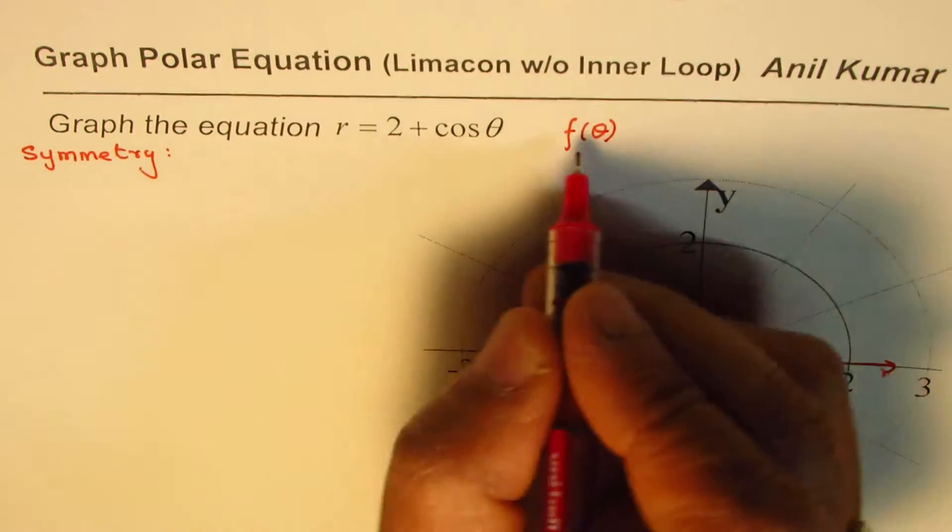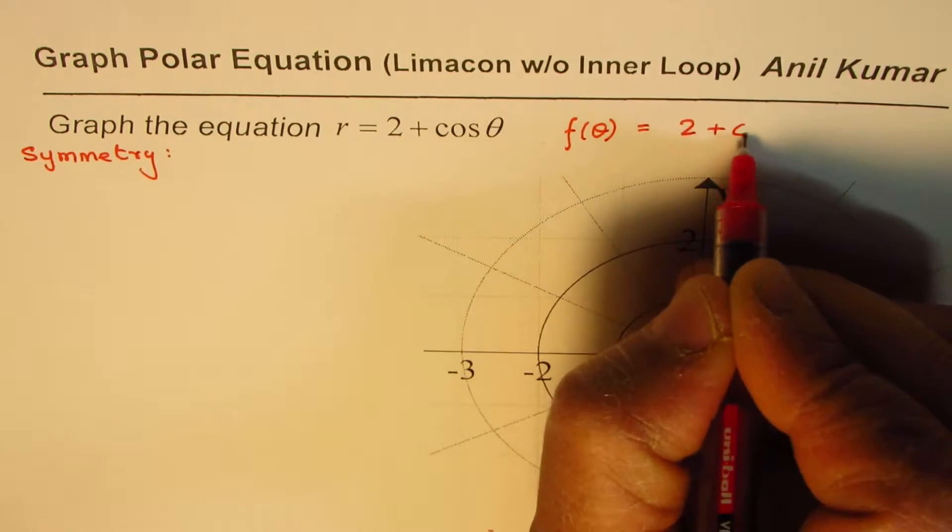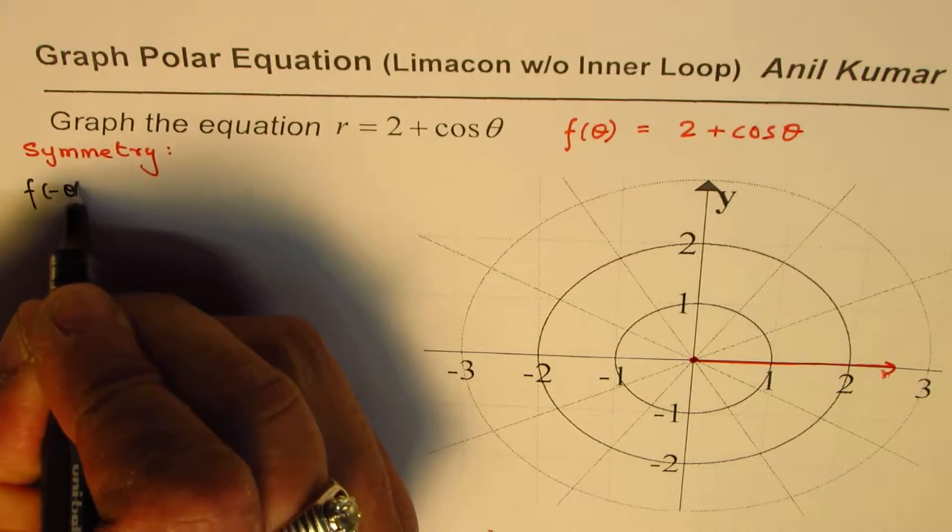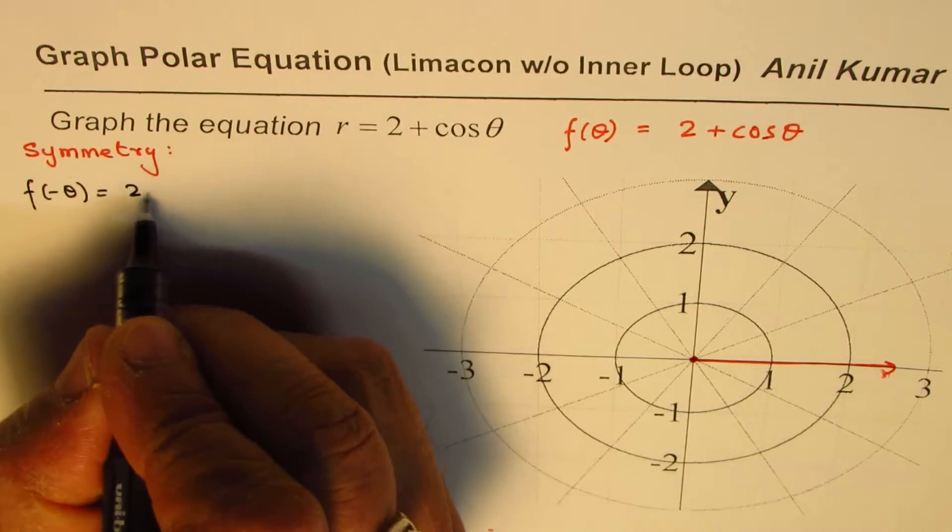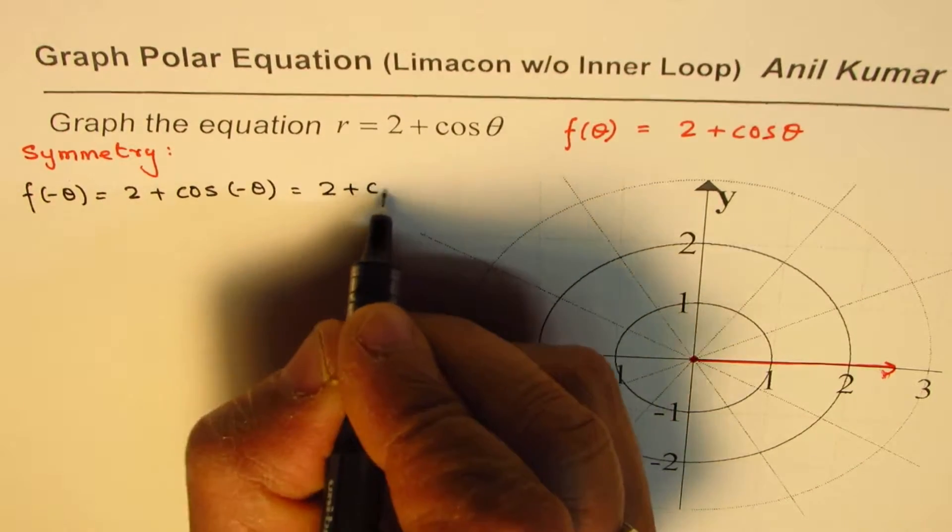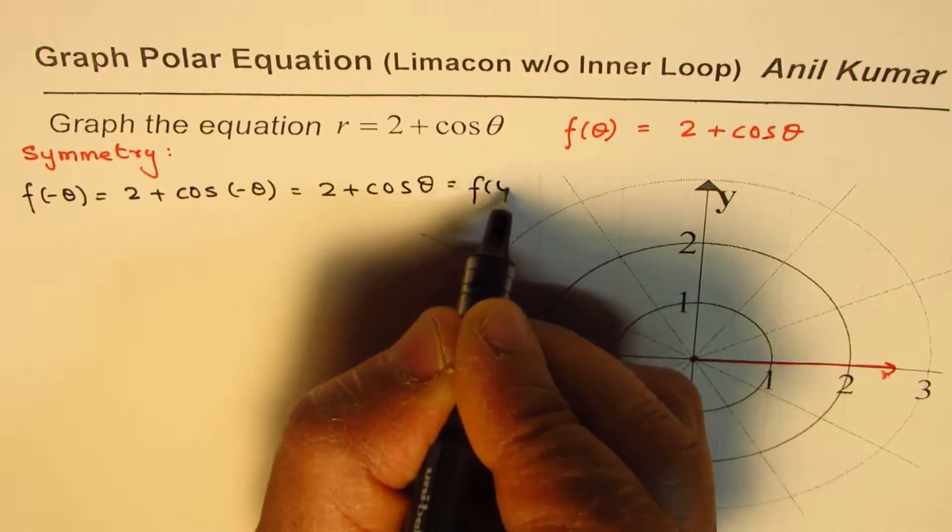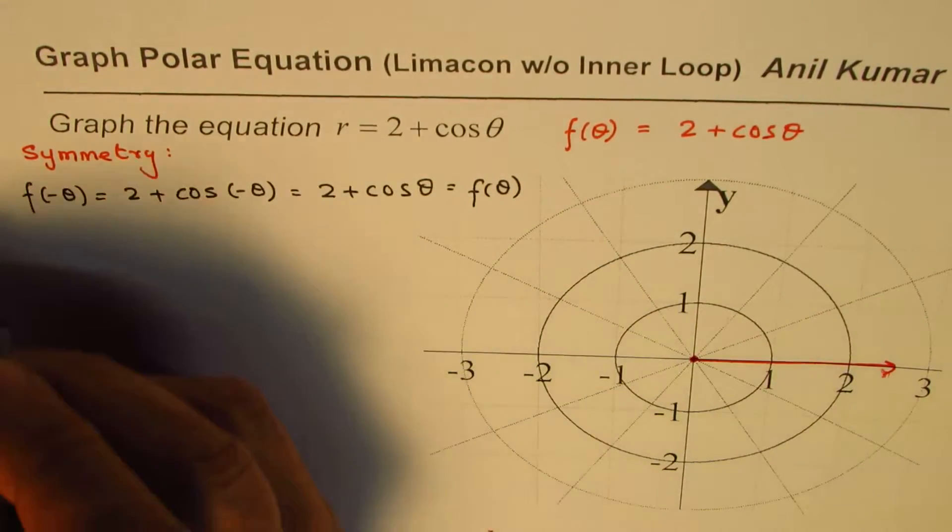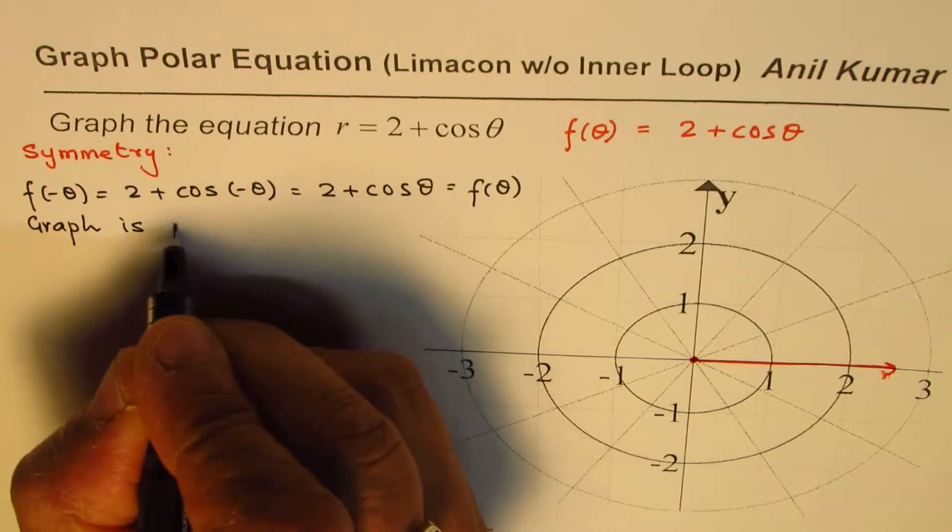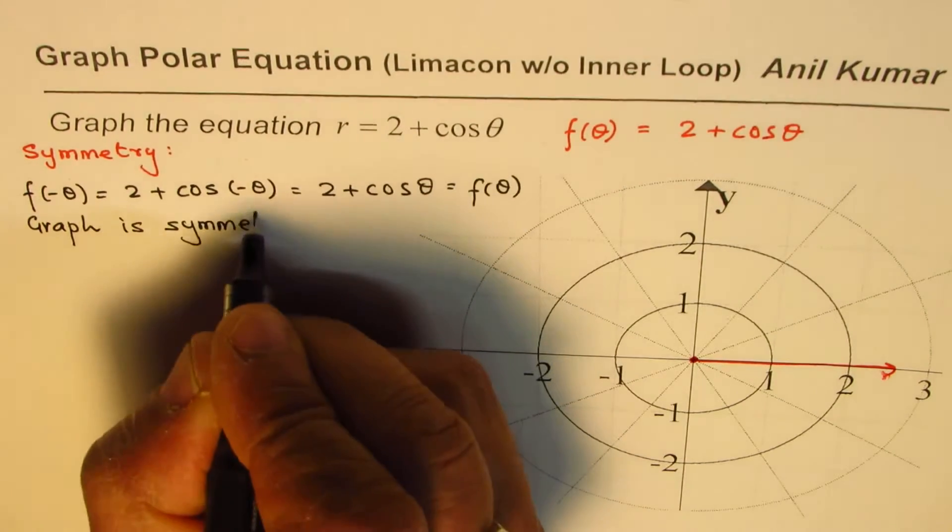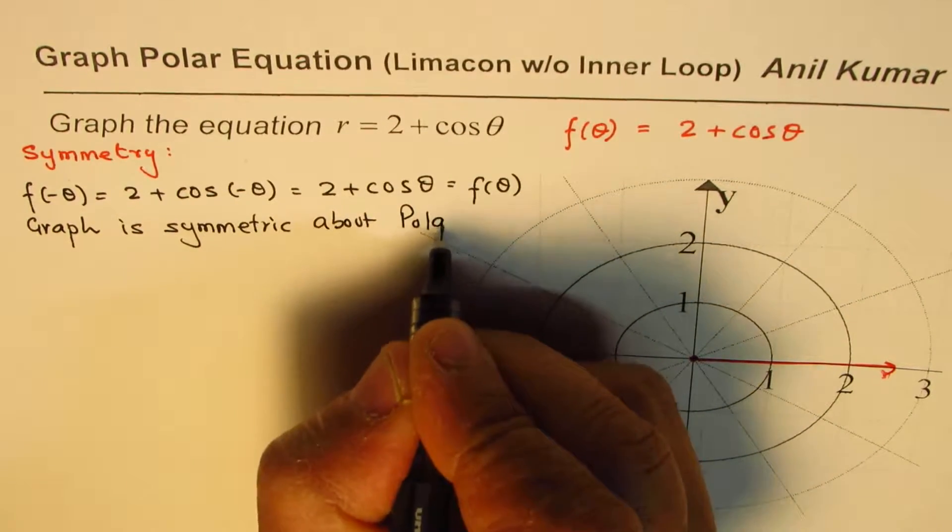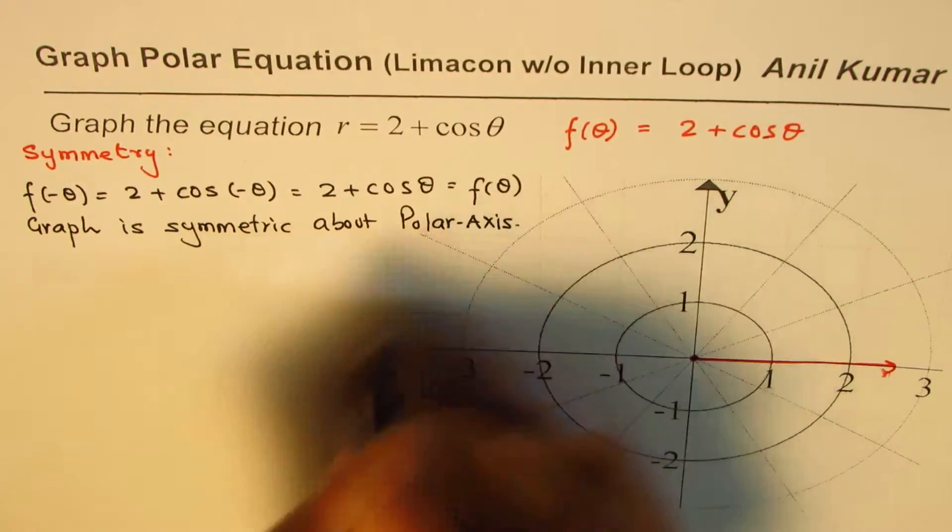Cos is an even function so the equation here could be written as r equals f of theta equals 2 plus cos theta. Now let us test for the value what happens for f of minus theta. If I substitute theta with minus theta I get 2 plus cos of minus theta which is same as 2 plus cos theta or f of theta. So if f of minus theta equals f of theta it means the graph is symmetric about the polar axis.